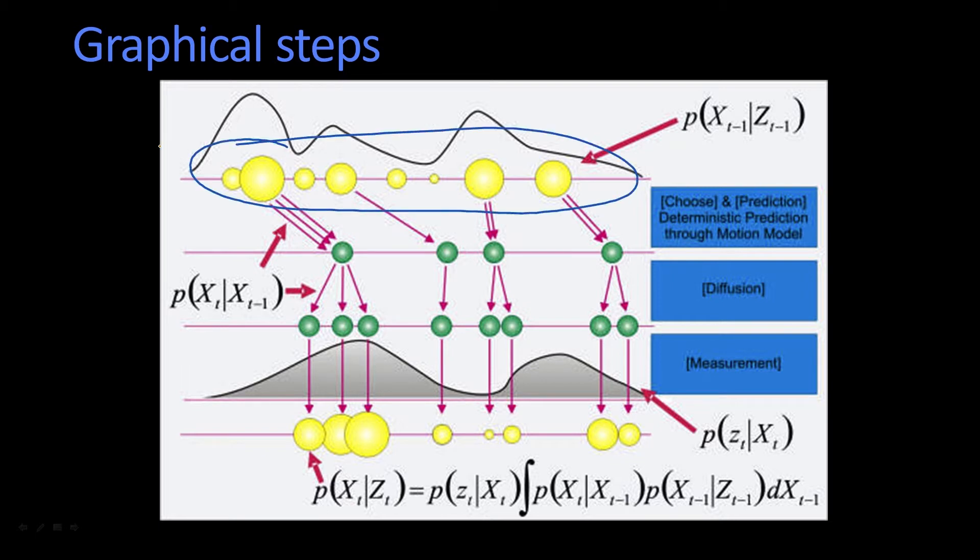Those particles are not uniformly weighted. Remember, the sum of all the weights is one. Some particles have more weight than others. That is, that particle has a higher probability.